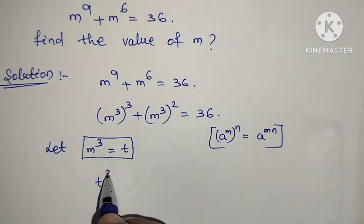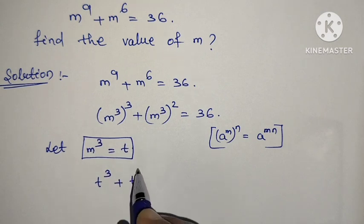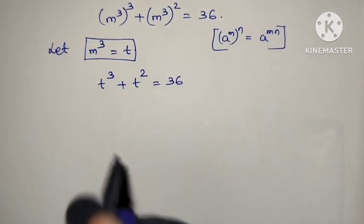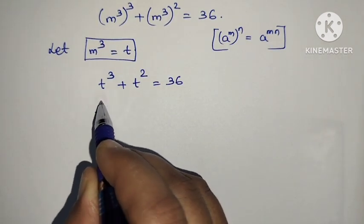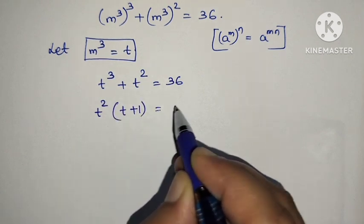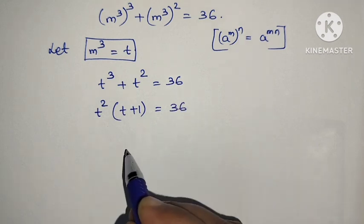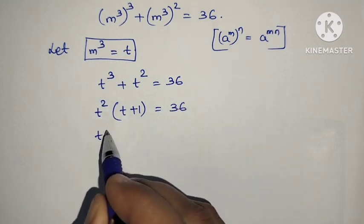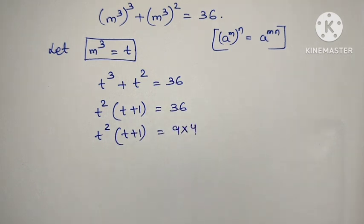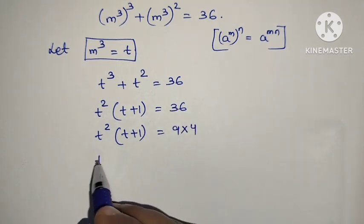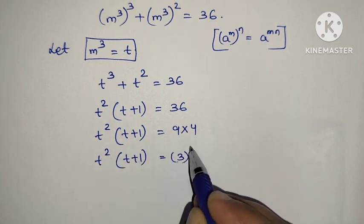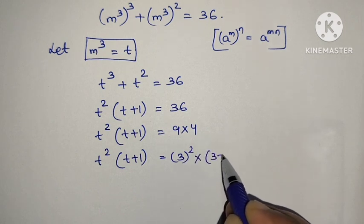Then t cubed plus t squared is equal to 36. Then t squared is common, so t squared times (t plus 1) is equal to 36. We split 36 as 9 into 4. Then t squared times (t plus 1) is equal to 3 squared into (3 plus 1).